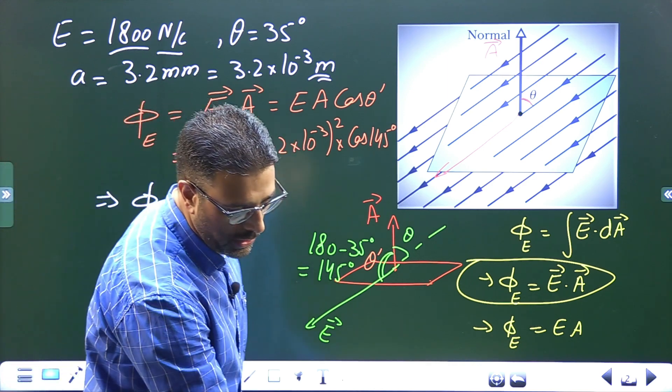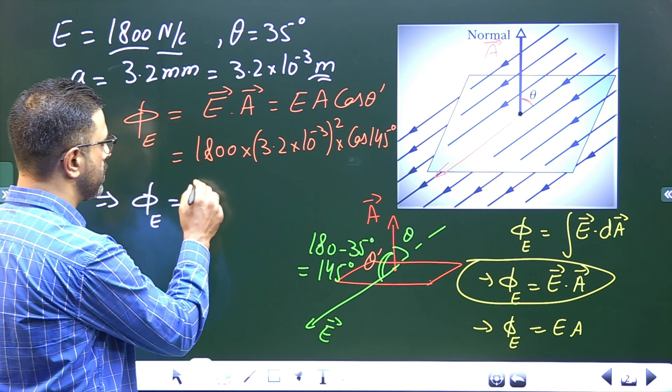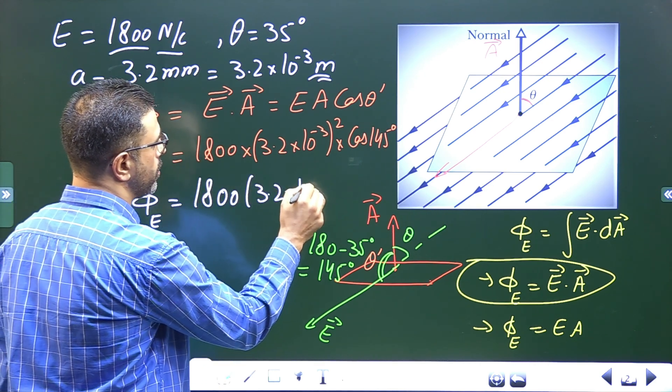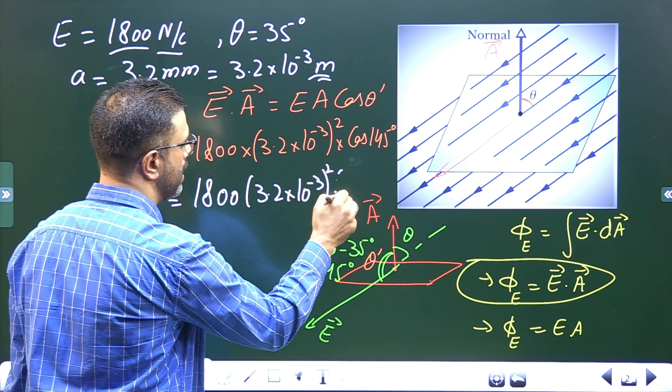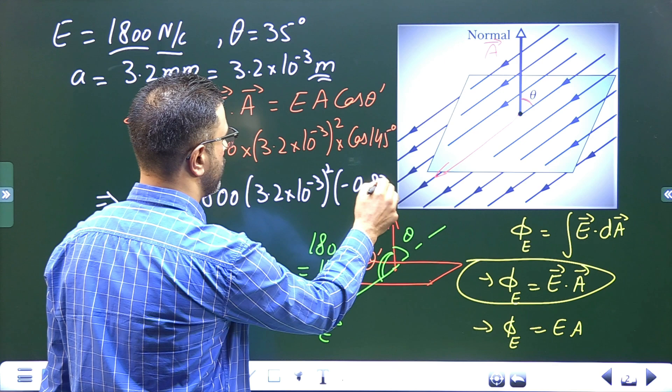So this I have worked it out. Cos of 145 is minus 0.82. So this is 1800 into 3.2 into 10 to the power minus 3 square into minus 0.82.